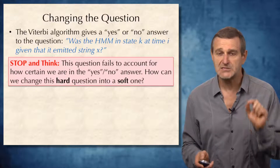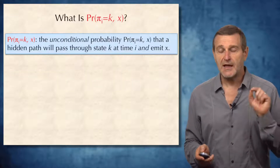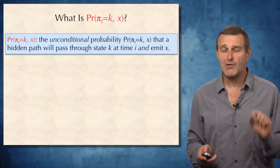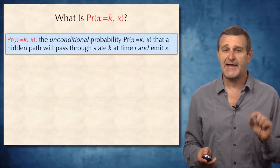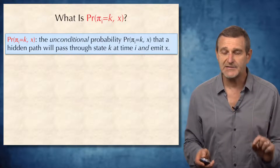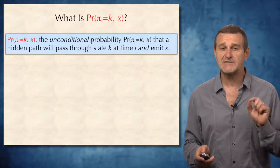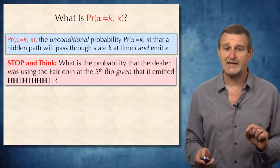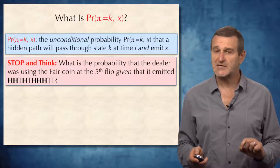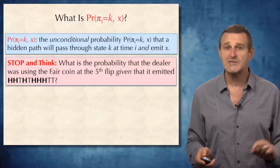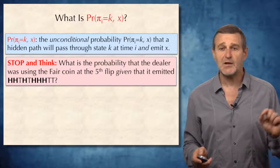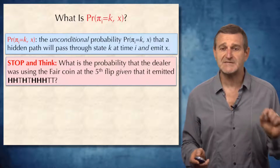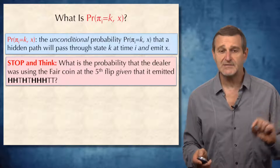We now want to give a soft answer to this question. To give this soft answer, we need to define the notion of probability π(i)=k,x, which is the unconditional probability that a hidden path will pass through state k at time i and emit x. For example, this translates in the crude casino to: what is the probability that the dealer was using the fair coin at the fifth flip, given that it emitted a given string?